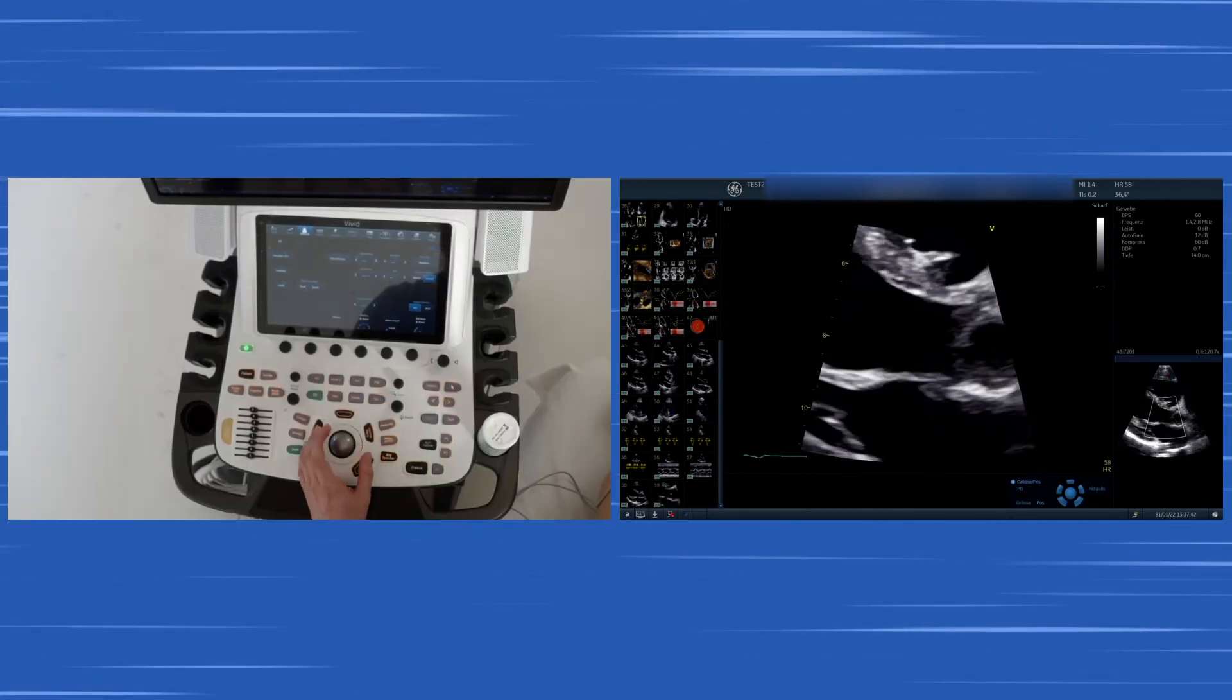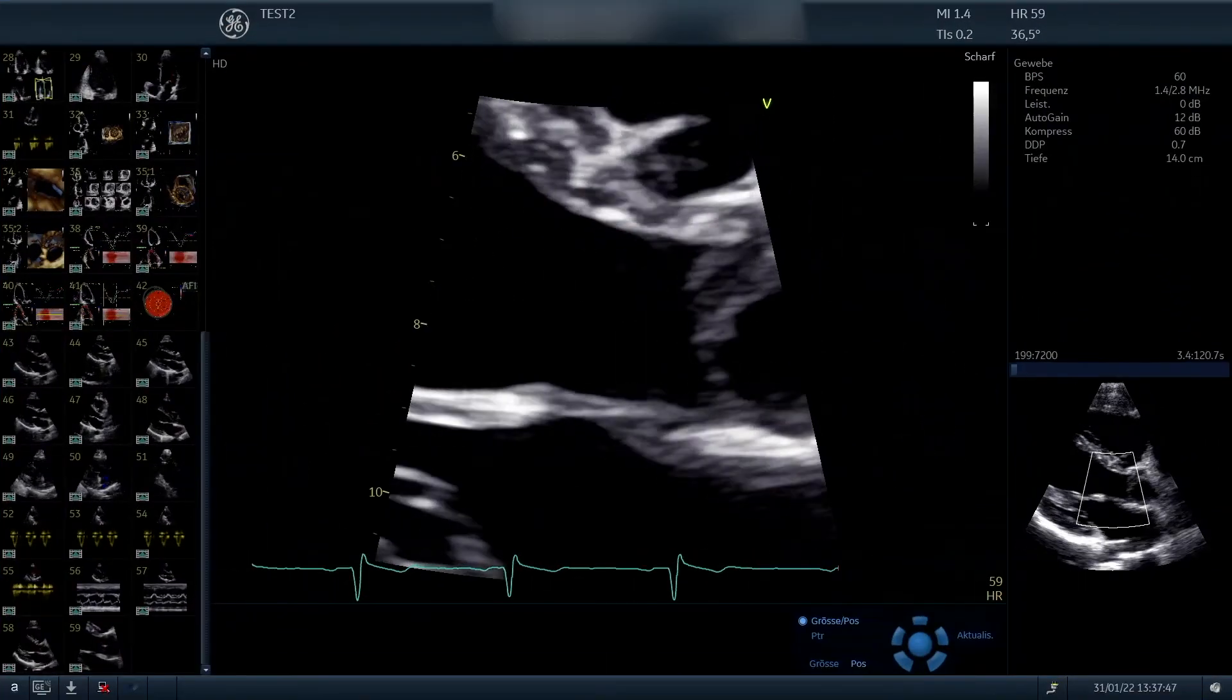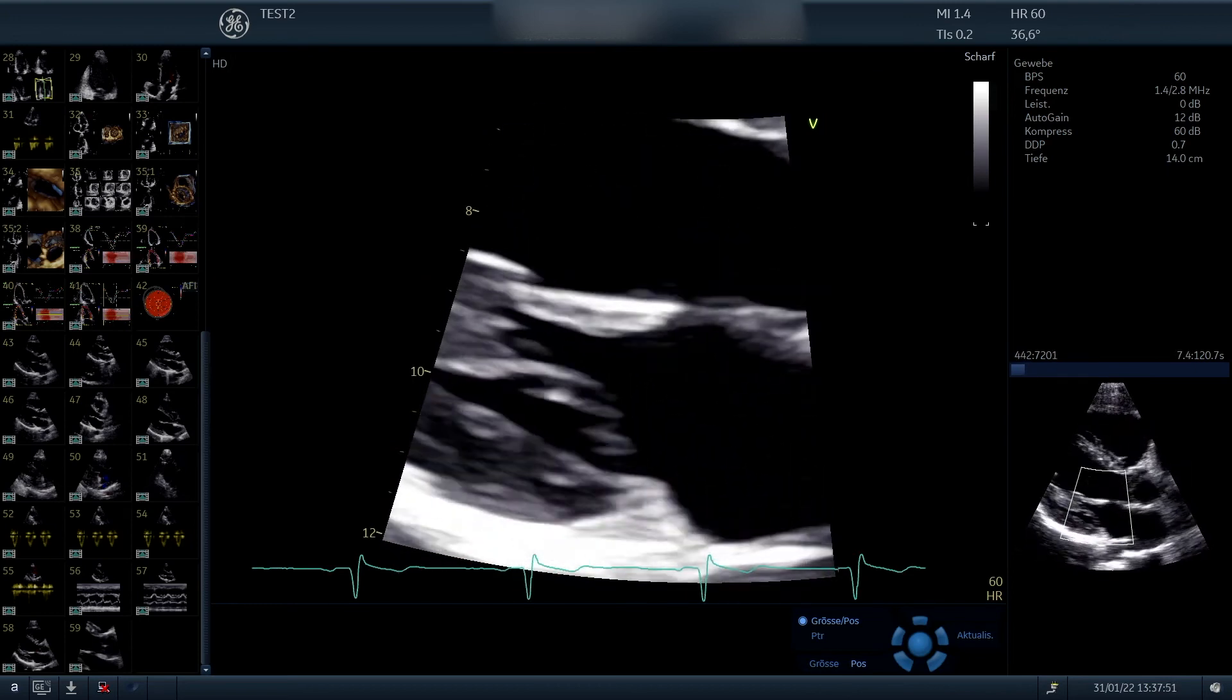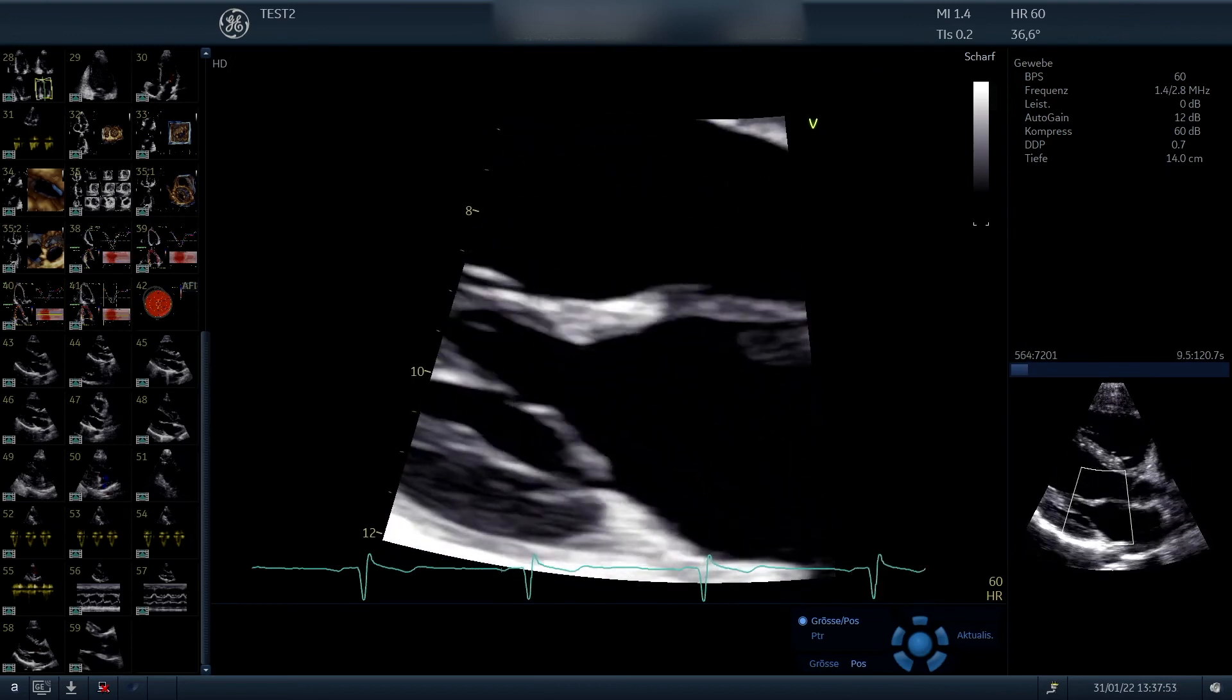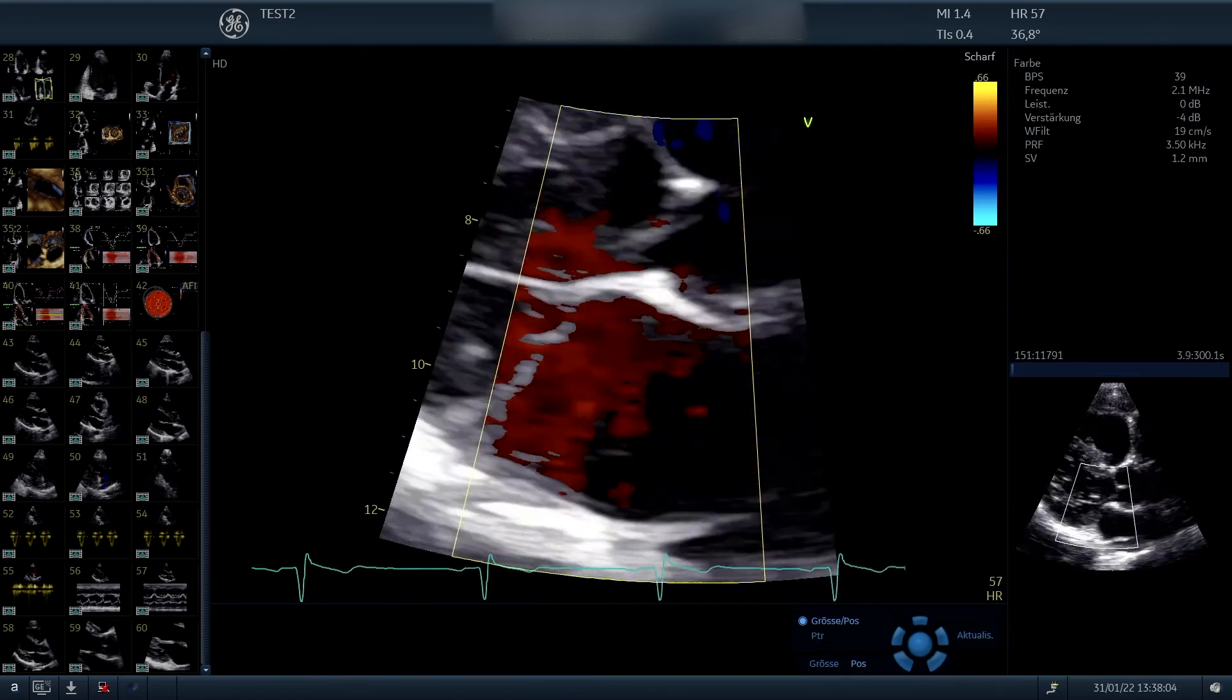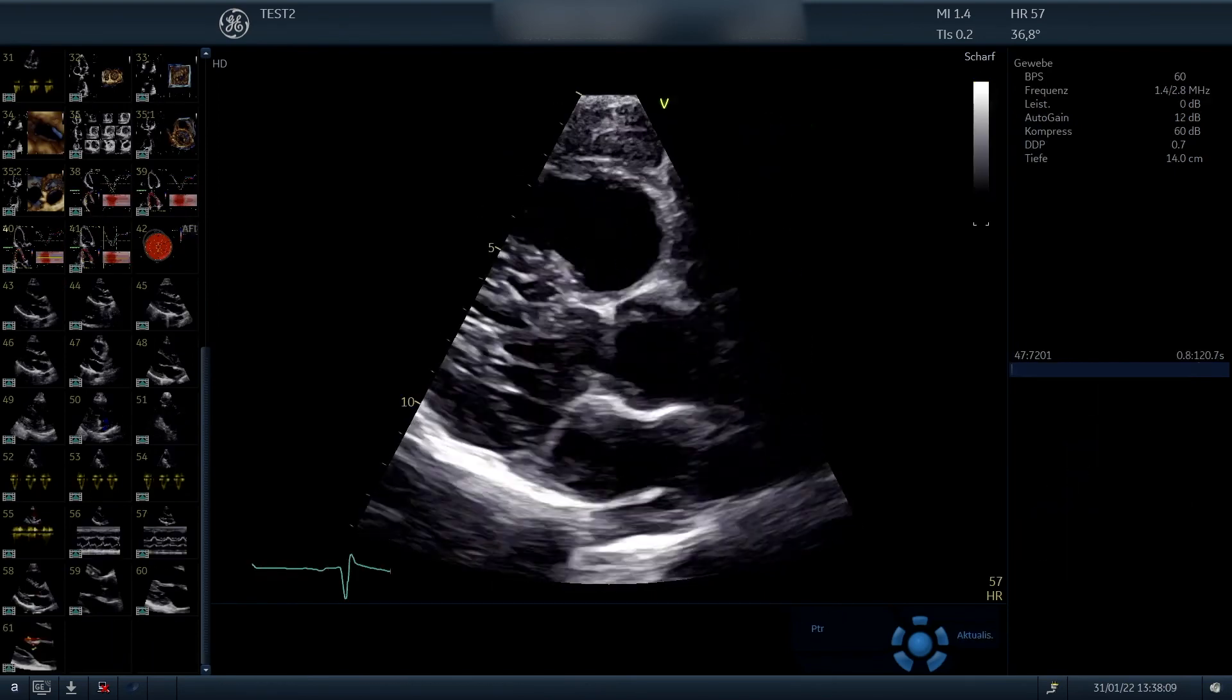We can also do that with the mitral valve and focus our view on the mitral valve, the anterior mitral valve leaflet upwards and the posterior downwards in the screen. And you can also add color Doppler in this setting after saving the image. And you can see where regurgitation by tilting the transducer might be located.